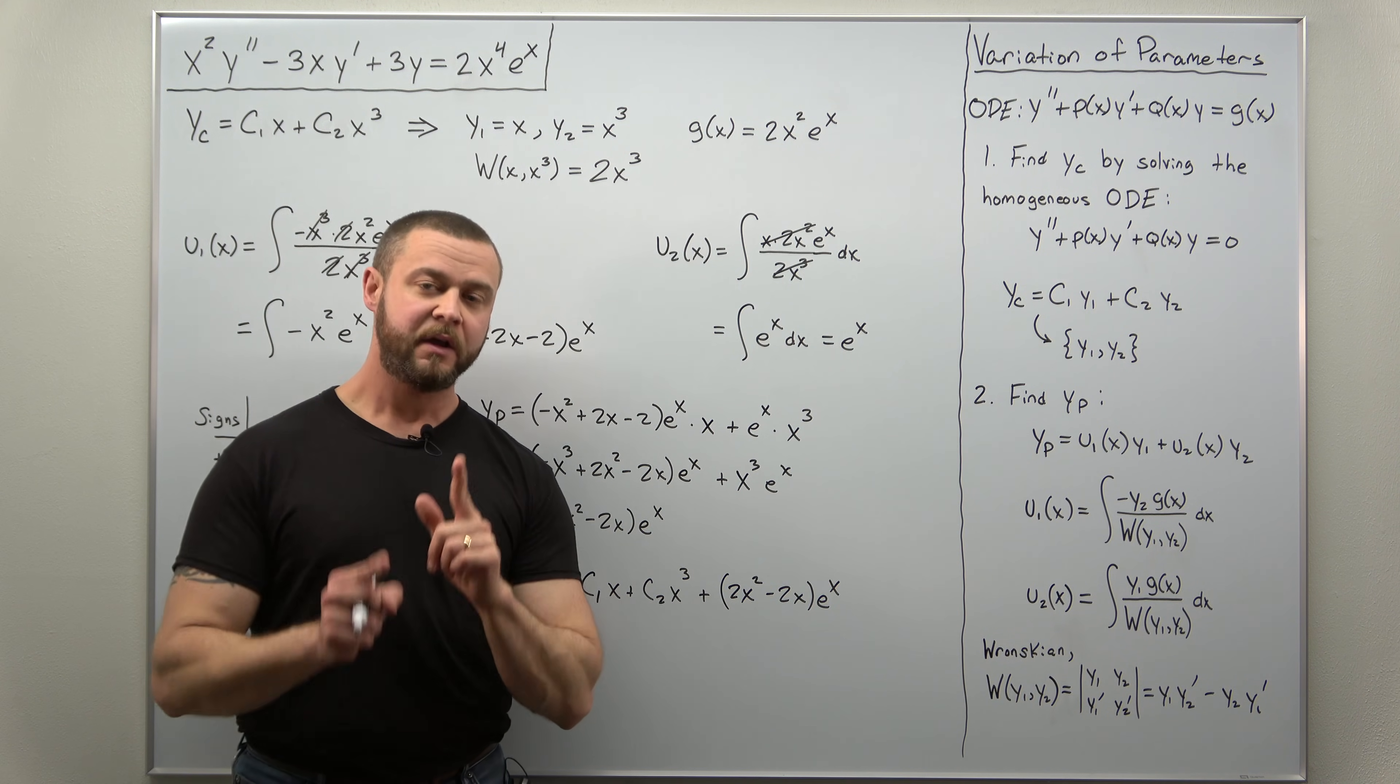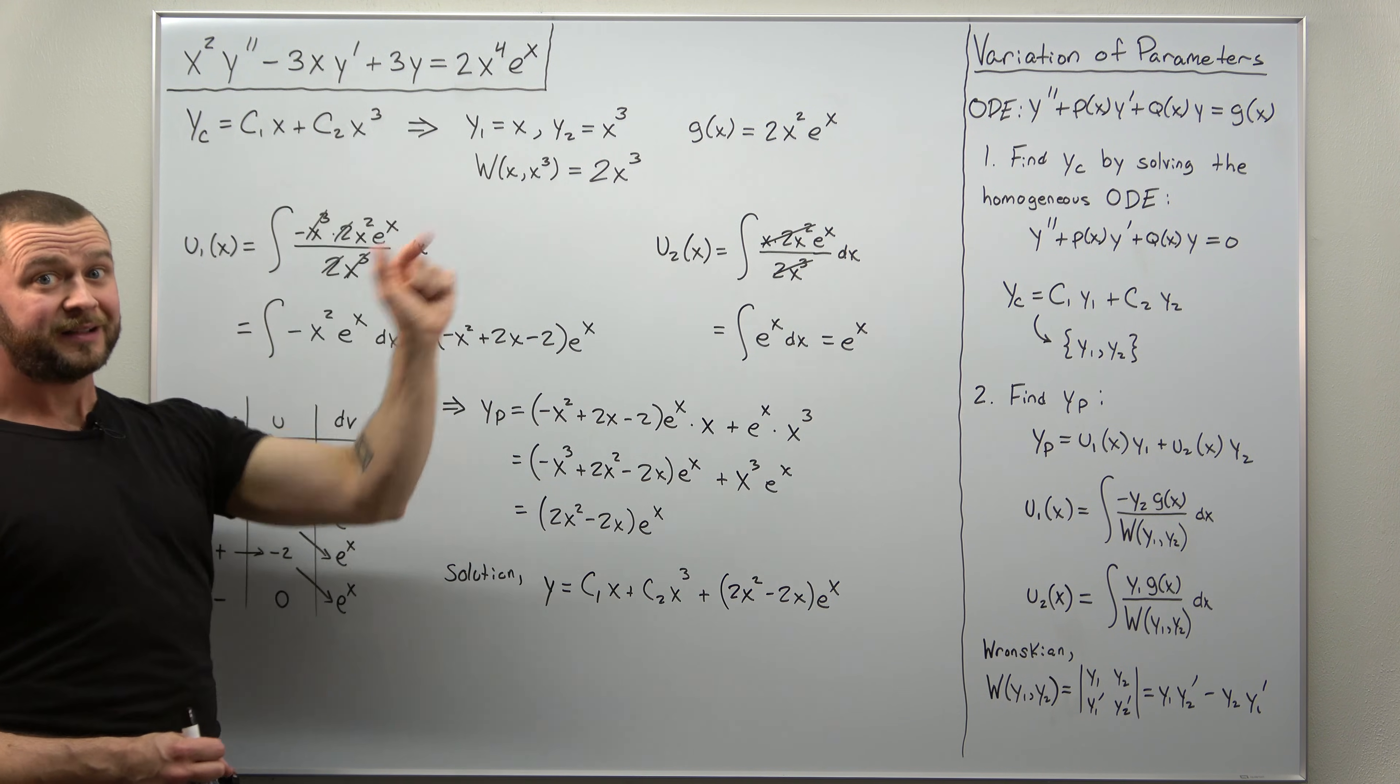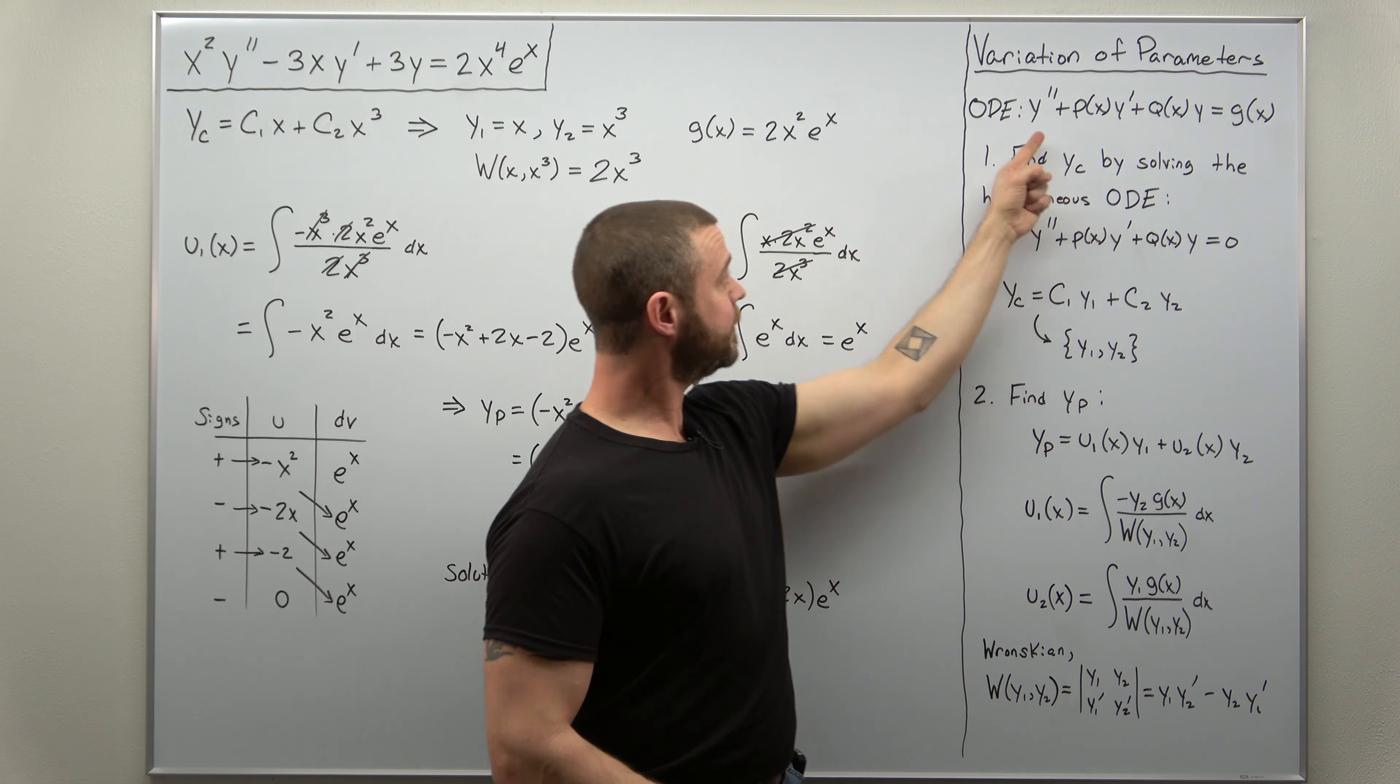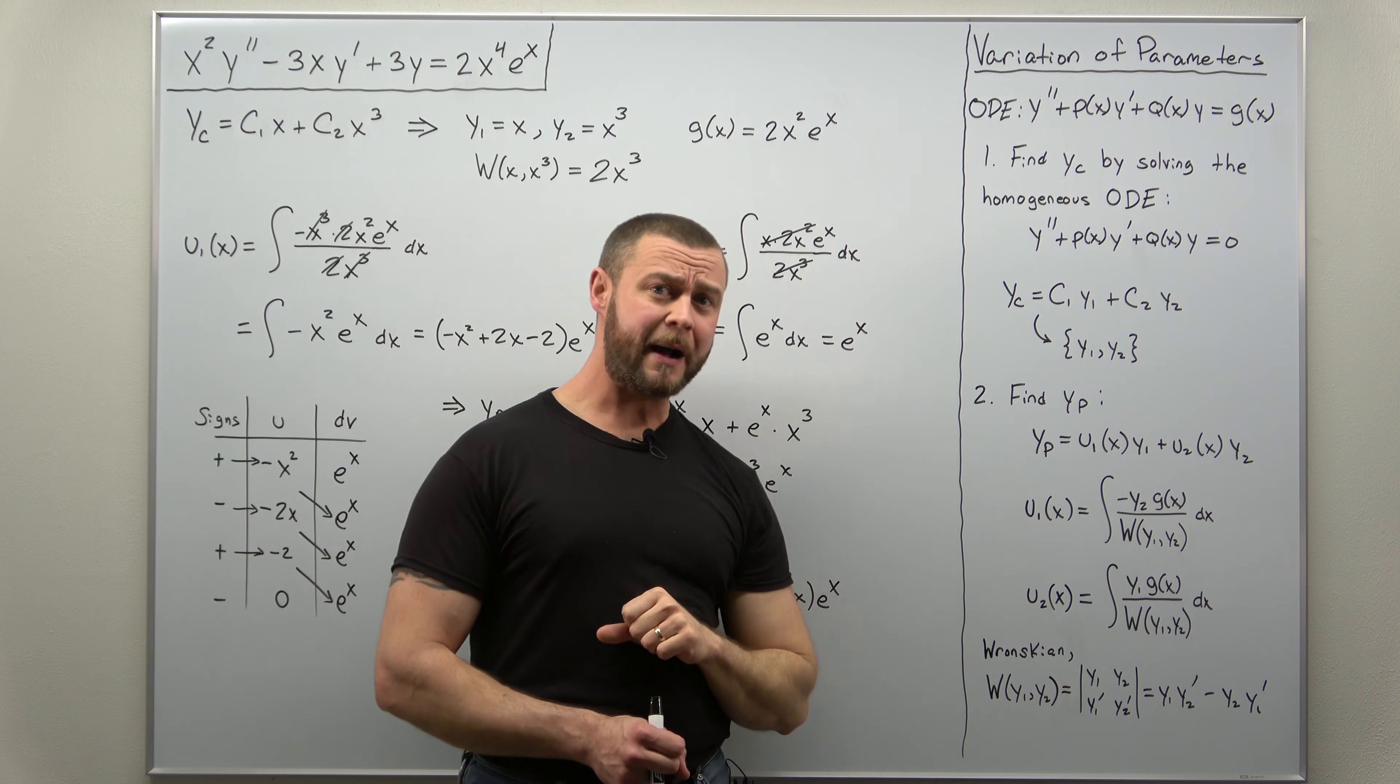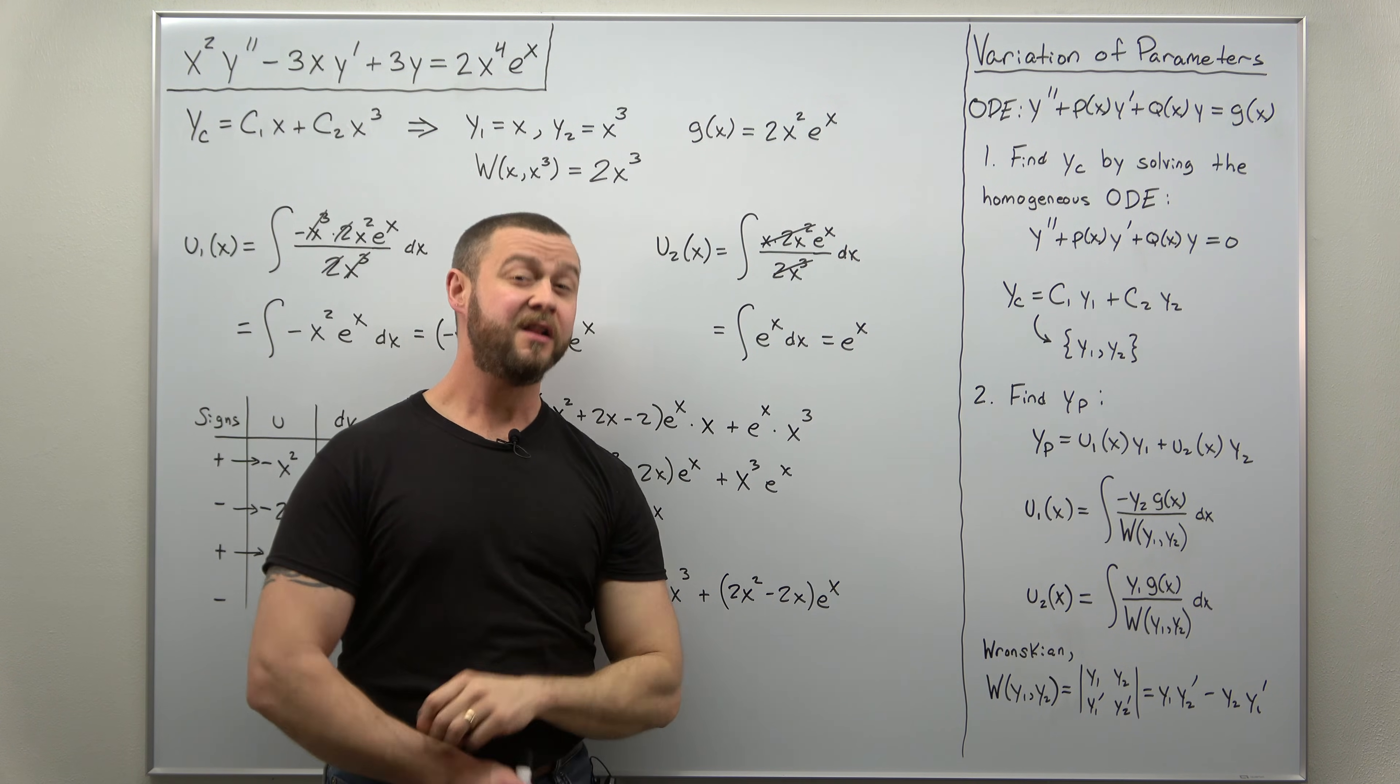This is a really good problem. It's what you might call a trick question. Since we cannot identify G of X in the original form, G of X here was not 2X to the fourth times E to the X. And again, the reason for that, this non-homogeneous Cauchy-Euler equation is not in this form, where the second derivative term has a 1 in front of it. Hope you enjoyed the video. Hopefully you learned how to solve this type of problem and not fall for the trick here of incorrectly identifying G of X. Divide off your factor of X squared and it falls into place from there. Support the channel. Like and subscribe.